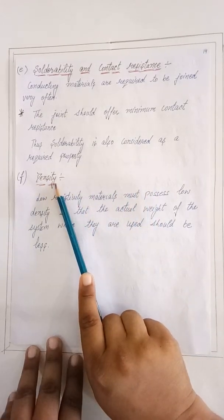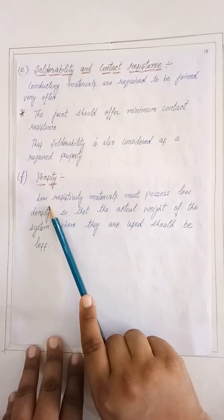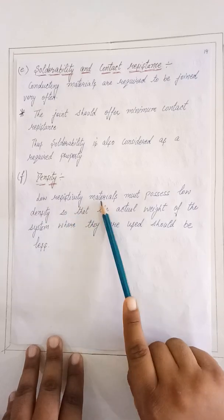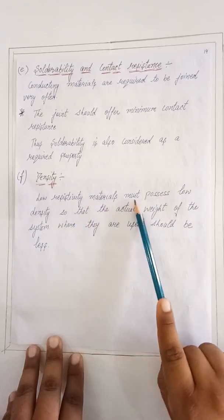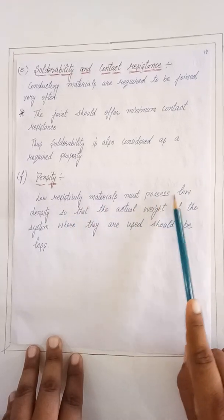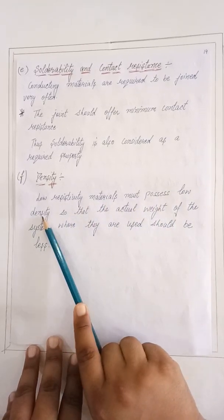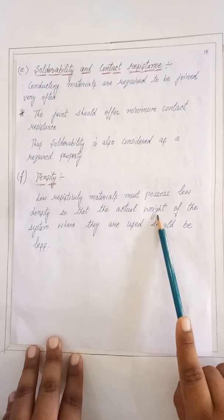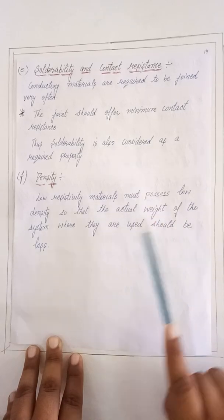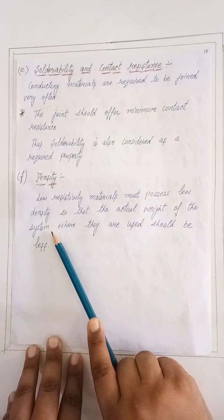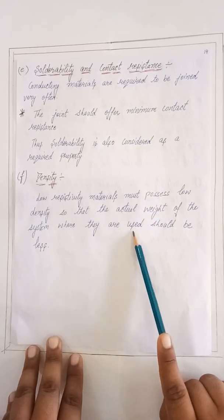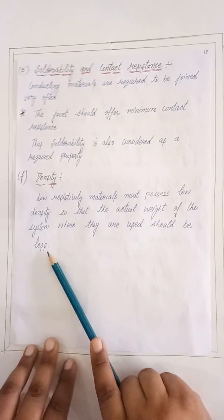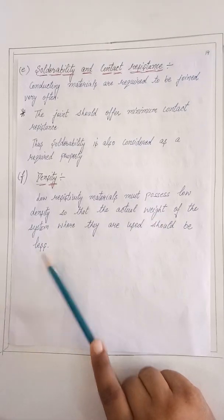The last property is density. Low resistivity materials must possess a low density so that the actual weight of the system where they are used should be less.